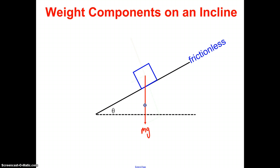Are there any other forces acting on the object? Well, we have the incline pushing back against the object, perpendicular to the incline, and we would call that normal force. So we'll label that F subscript capital N. Normal force is the force of a surface pushing back on an object, and to be normal in physics means to be perpendicular — so that force is perpendicular to the surface.